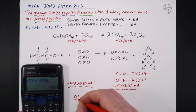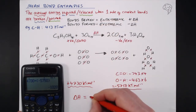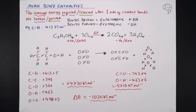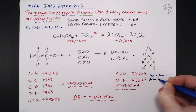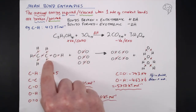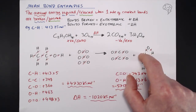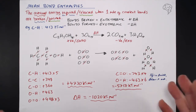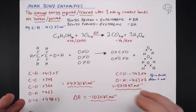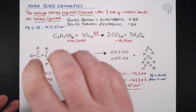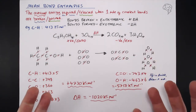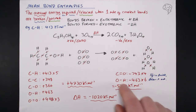Adding the two together: +4730 + (−5750) gives a delta H of −1020 kJ/mol — that's the final answer. Rather than trying to remember 'products minus reactants,' just remember: breaking bonds is positive, forming bonds is negative, then add them together. It's a simple balance between the two.